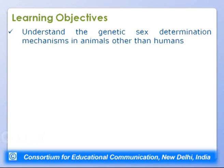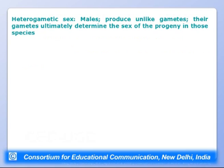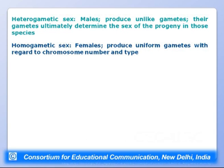The learning objectives are to understand genetic sex determination mechanisms in animals other than humans, and to understand environmental sex determination — where the sex of an individual is influenced by environment. The heterogametic sex (males) produces unlike gametes that determine progeny sex, while the homogametic sex (females) produces uniform gametes — XX in females and XY in males as seen in humans.